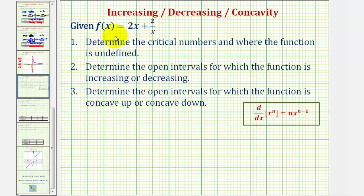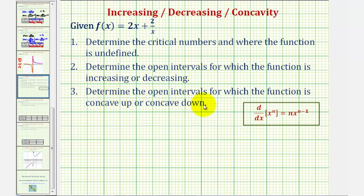We're given the function f of x equals 2x plus 2 divided by x. Number one, we're going to determine the critical numbers and where the function is undefined. Number two, we're going to determine the open intervals for which the function is increasing or decreasing. And we may also determine the open intervals for which the function is concave up or concave down.